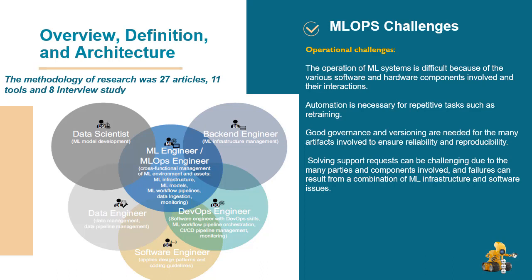Operational challenges: it is challenging to operate ML manually due to different stacks of software and hardware components and their interplay. Robust automation is required for repetitive tasks such as retraining capabilities. A large number of artifacts require strong governance and versioning of data, model, and code to ensure robustness and reproducibility. Resolving a potential support request is challenging as many parties and components are involved. Failures can be a combination of ML infrastructure and software.